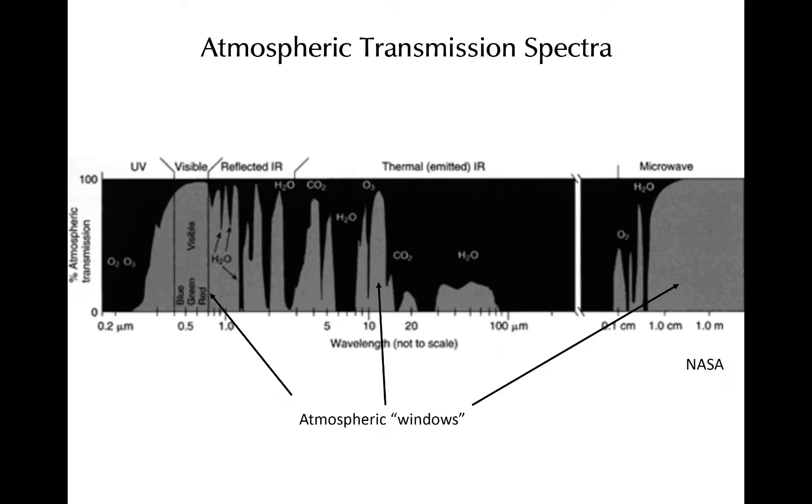Atmospheric transmissivity is shown here as a function of wavelength. In this figure, the gray shaded area denotes how much radiation can pass through the entirety of an atmosphere with average temperature and moisture content for different wavelengths shown on the x-axis.